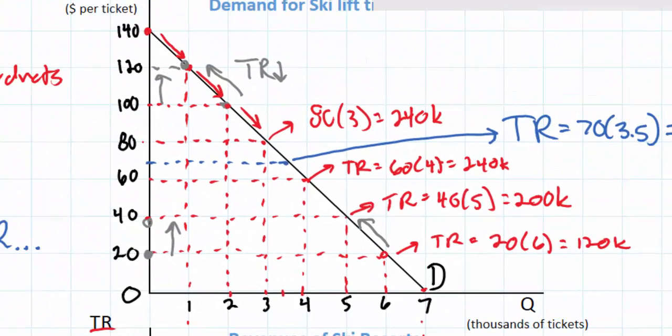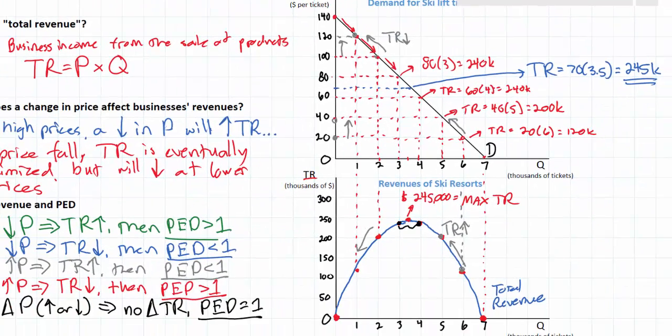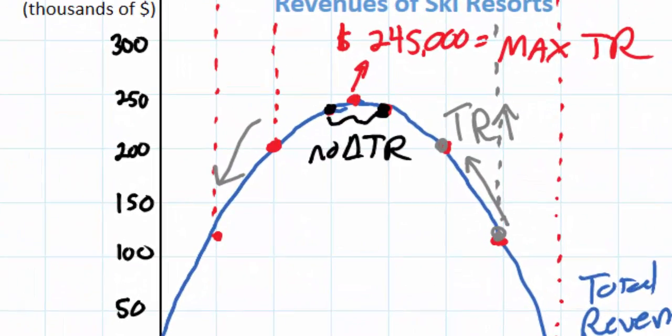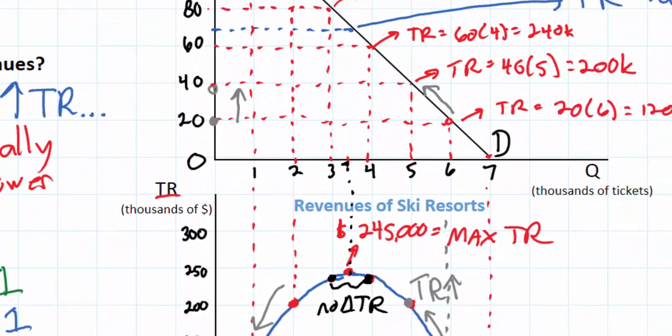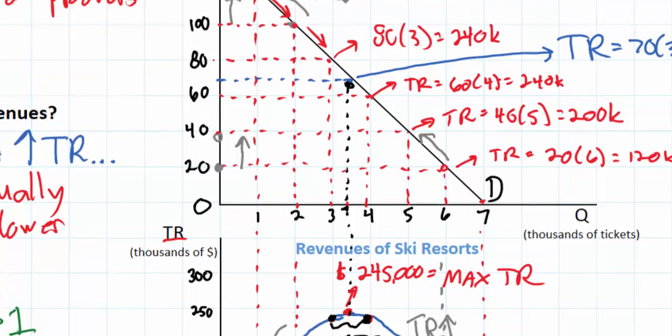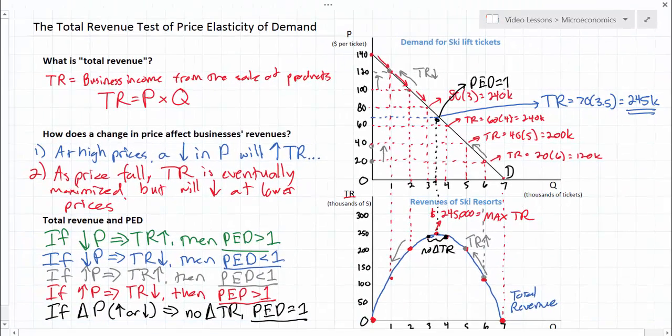Where along this demand curve is demand unit elastic? Well, you can see that between 3,000 and 4,000, there is no change in total revenue. So that means between 3,000 and 4,000 lift tickets up here, in other words, at a price of $70, the price of $70, PED is equal to 1. I'm going to clean this graph up and we'll come to some conclusions about the relationship between total revenues and price elasticity of demand.